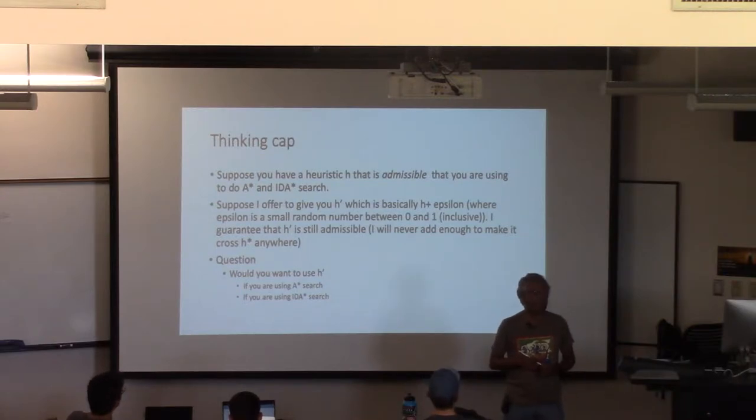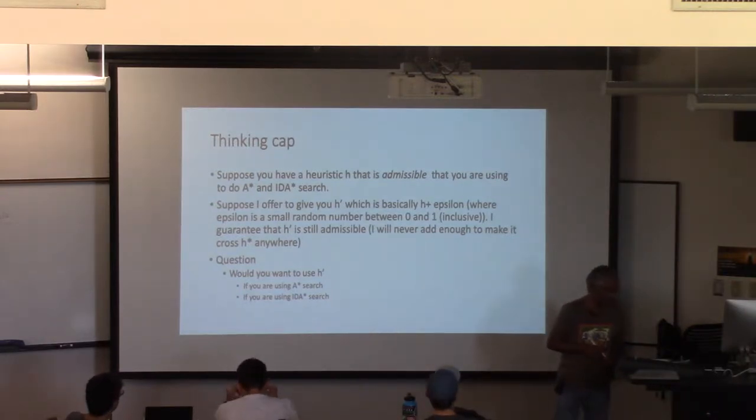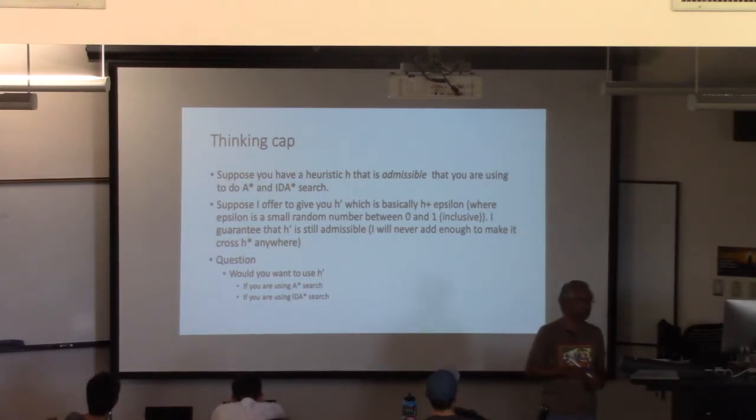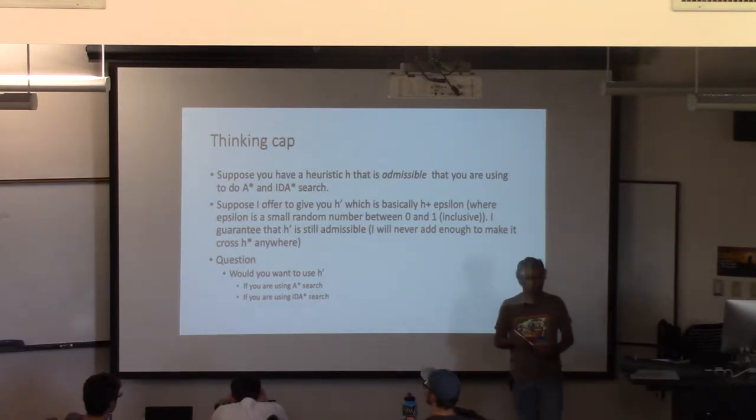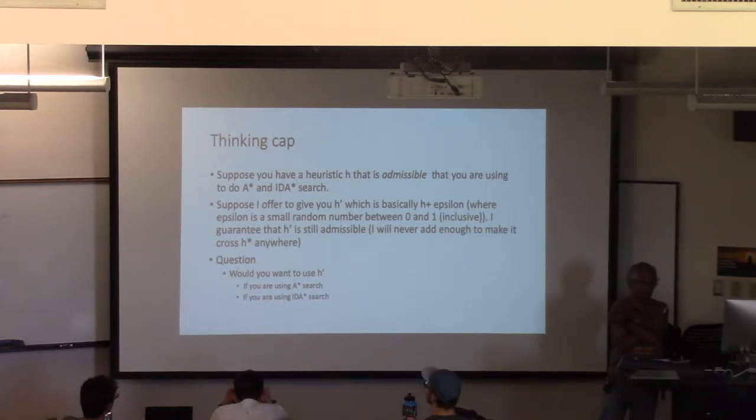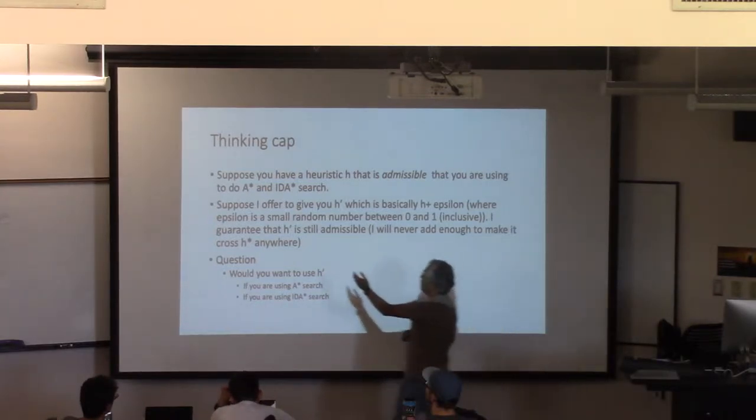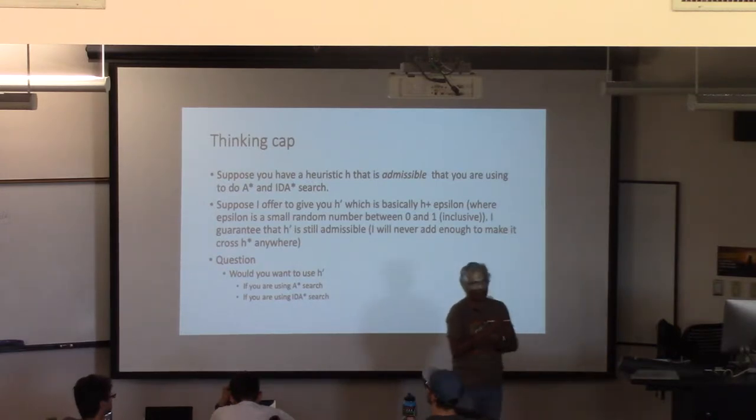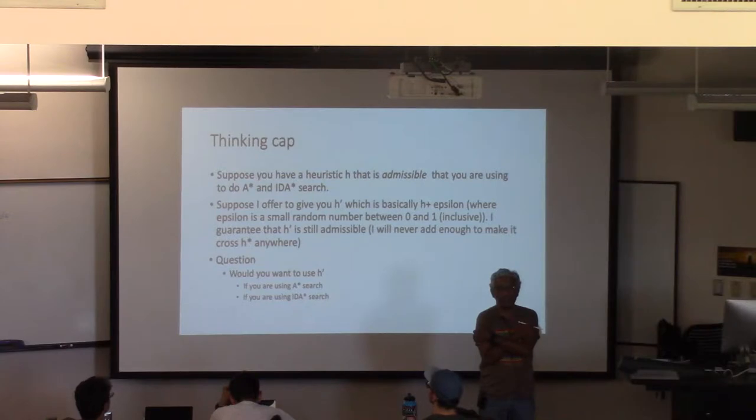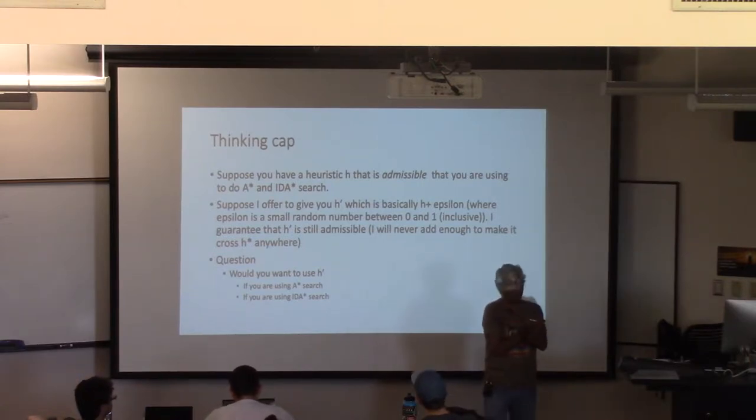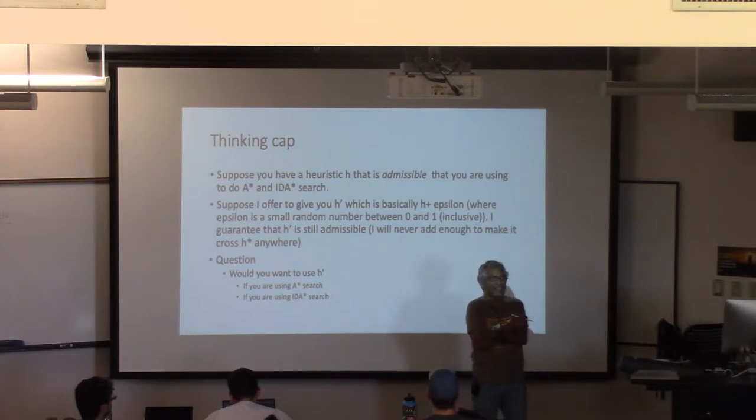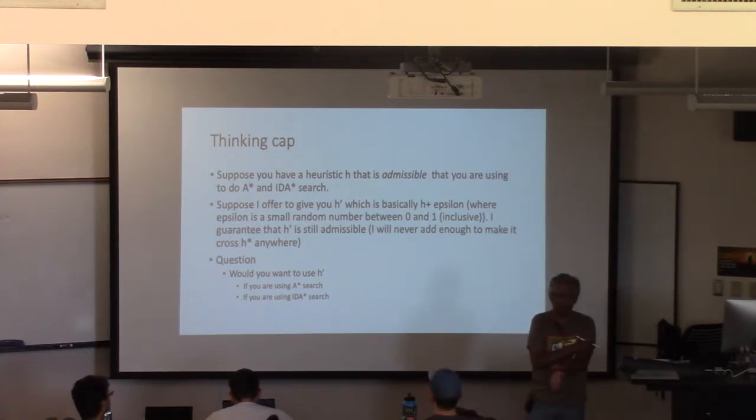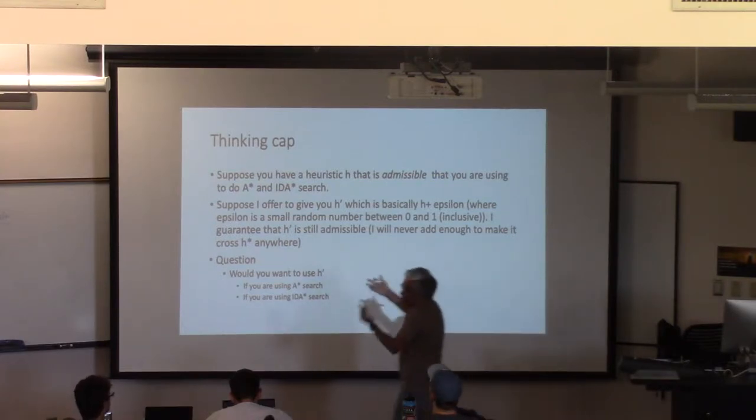So if you're guaranteeing that it's admissible and you have your function, you're just adding a constant to it, it'll basically take it a little above and closer, retaining the shape of the heuristic and take it closer to your h star. So I guess it'll be better. Why would adding a random number keep the shape? It's not very clear.